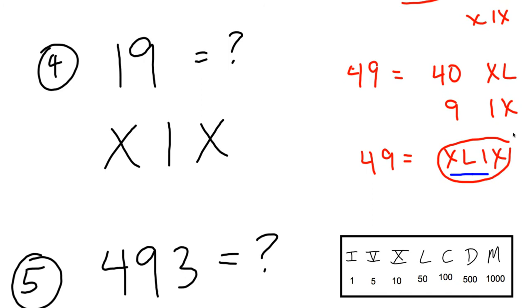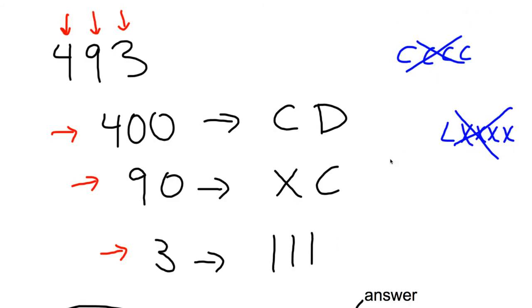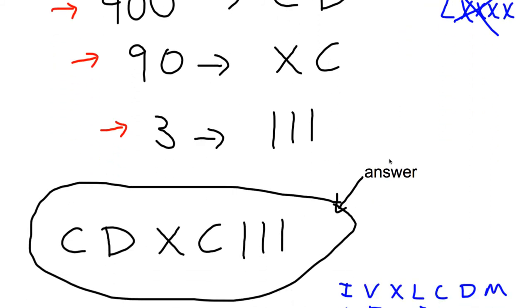How about 493? I want to pause the video, see if you can figure it out. As far as a strategy for how to do this, look at the 400 first, and then the 90, and then the 3. When I try to write the number 493, I'll take the 400 and write that. That's going to be CD because the C is the 100 subtracted from the 500. Then I work separately on the 90, which is XC, and then get the 3. So put all that together at the end, and you have 493.